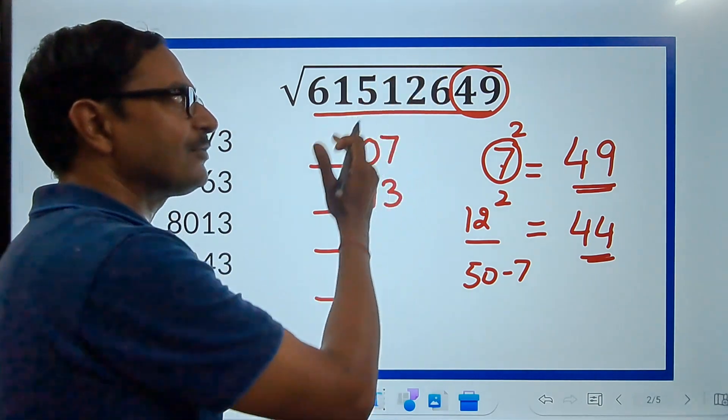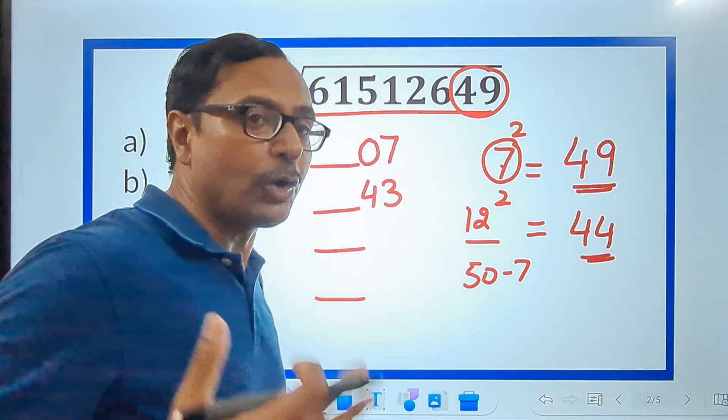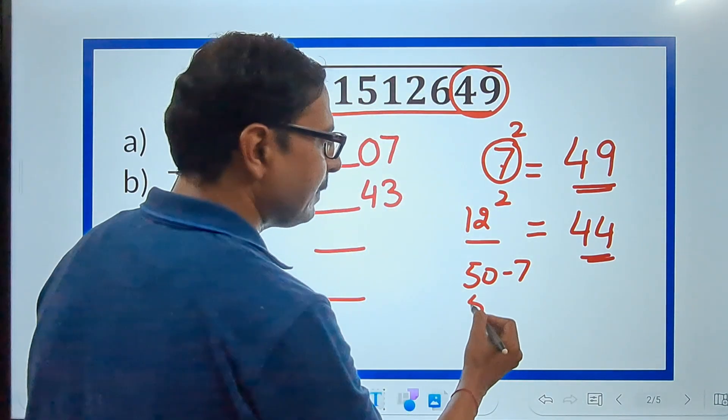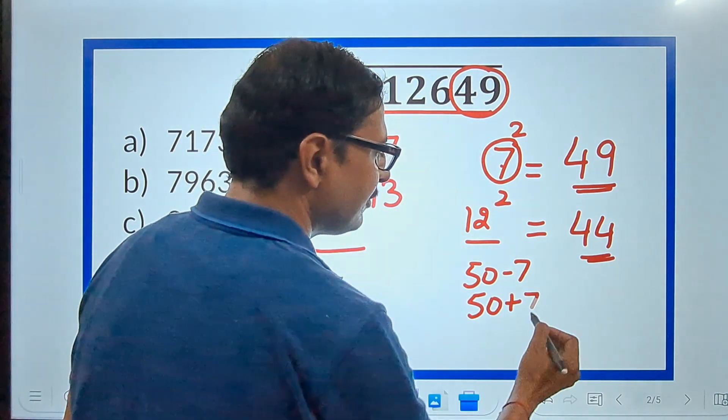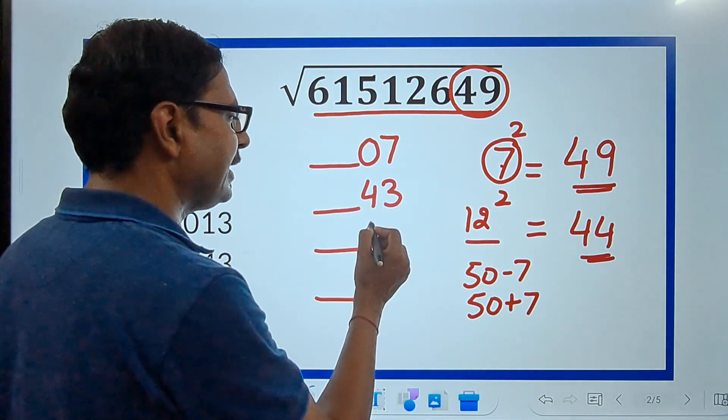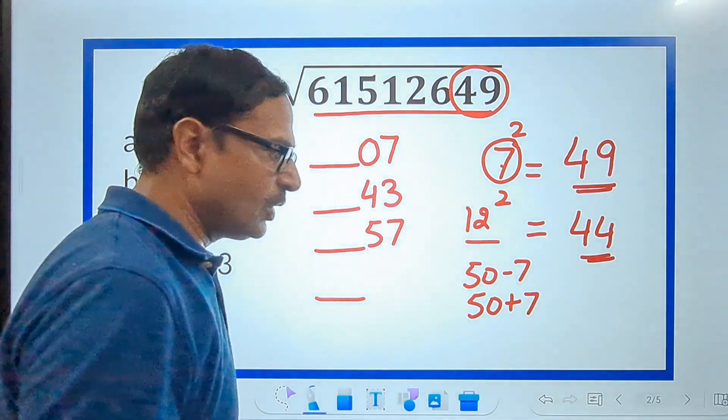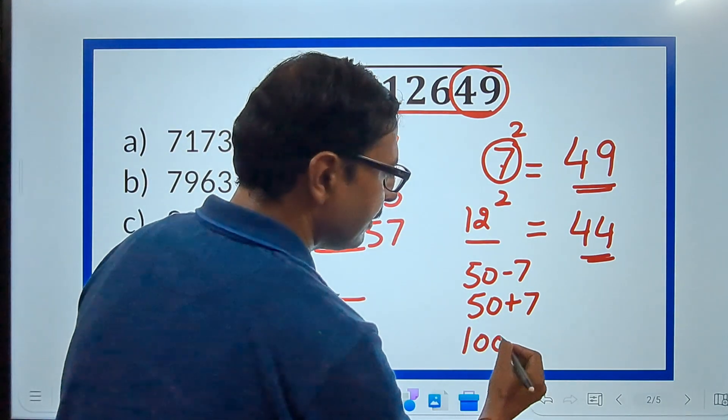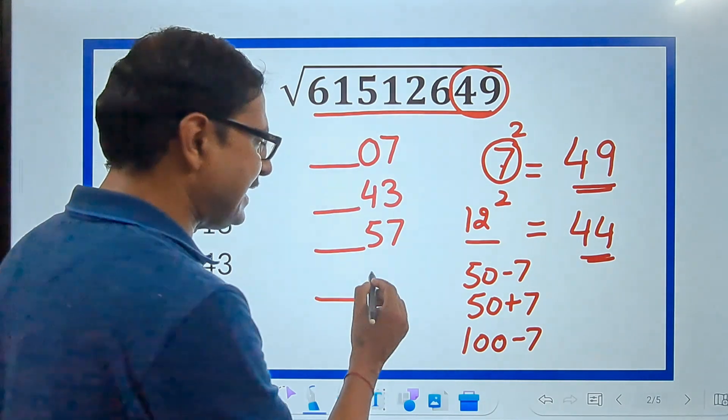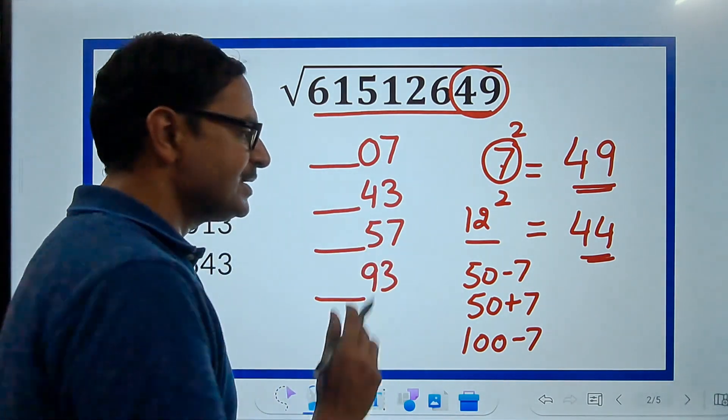So, 50 minus 7 is 43. So, my answer of this square root may end in 43. 50 plus 7, which is 57. So, my answer may end in 57. Or 100 minus 7, which is 93.